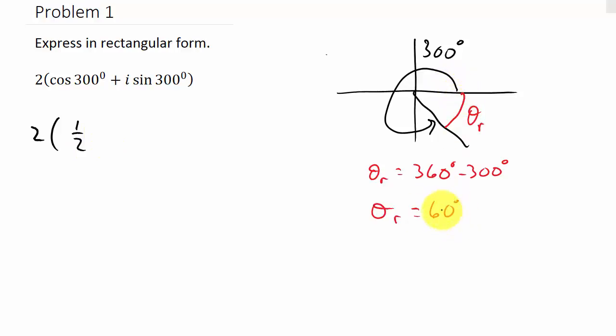Now, see, that just gives us the value. 1 half, square root of 3 over 2, whatever. But now we have to look and see what quadrant we're in. And you can see we're in the fourth quadrant. And cosine is positive in the fourth quadrant. So that means it's just positive 1 half.